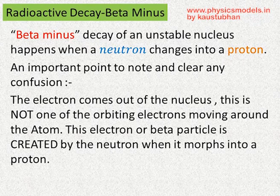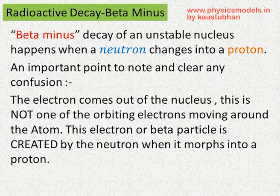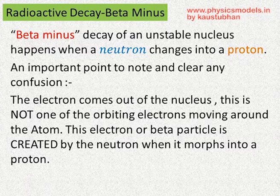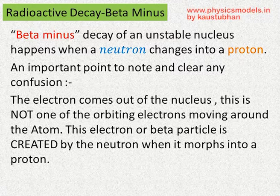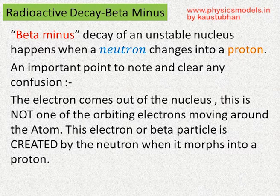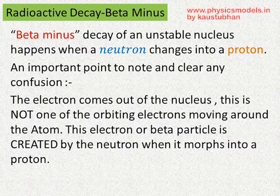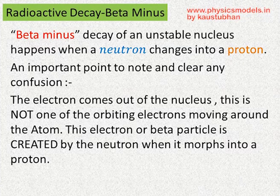As you saw in the animation, I wanted to remind once again that the electron which comes out as a beta particle is not one of those electrons which is orbiting the atom. The electron that comes out in a beta emission is created when the neutron becomes a proton. That should be very, very clear.